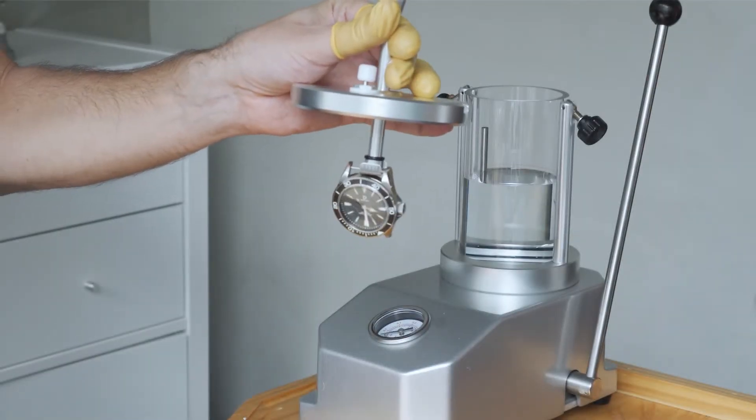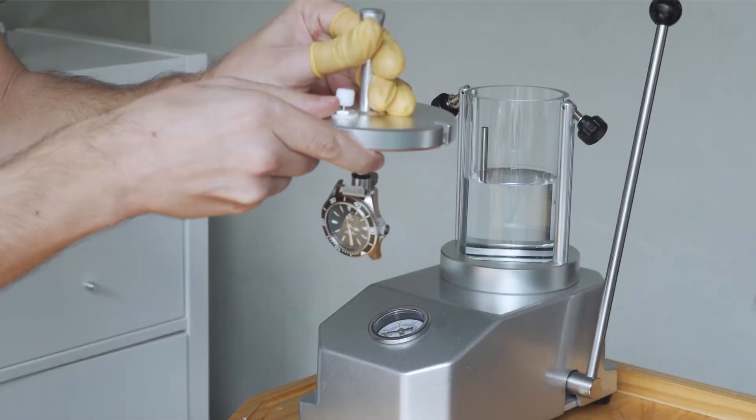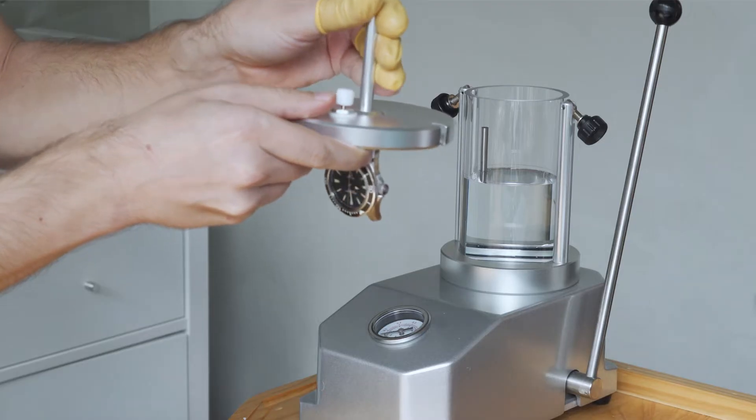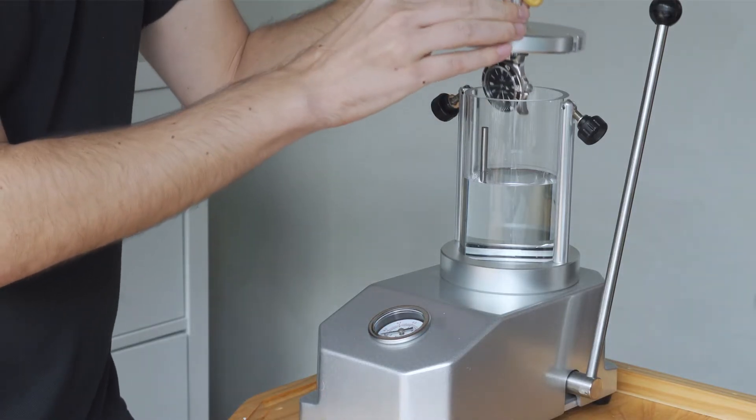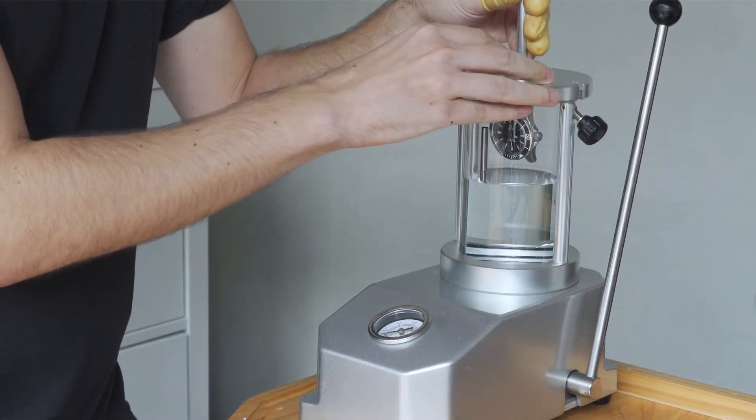With the watch hooked on, make sure the crown is pushed all the way in and the plunger is pulled to the top. Then place the lid onto the cylinder and screw-tighten the lid.